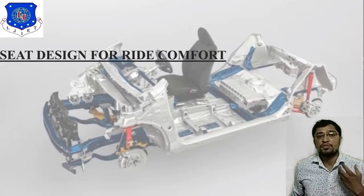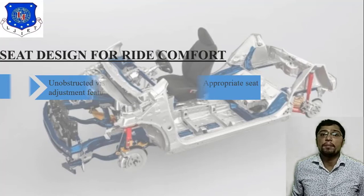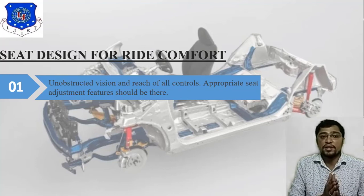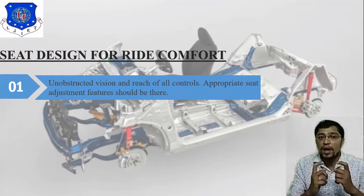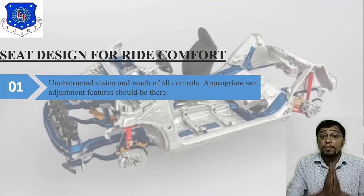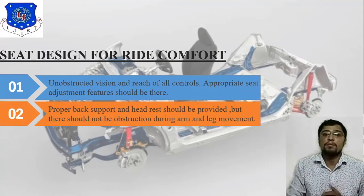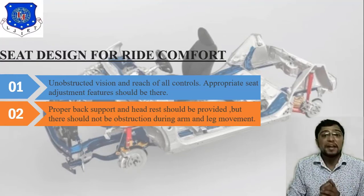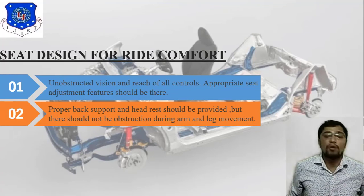The first important question is: which parameters do we need to consider for seat design for ride comfort? The first parameter is unobstructed vision and reach of all controls. Visibility is one of the main requirements — that's why we require different mirrors at different angles, and appropriate seat adjustment features should be present. The second point is that proper back support and head rest should be provided, since driver seat comfort is a main parameter. There should also be no obstruction during arm and leg movement.